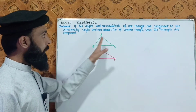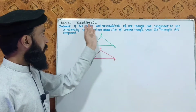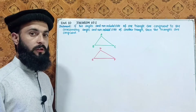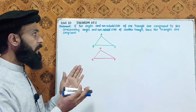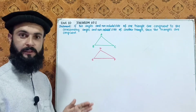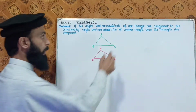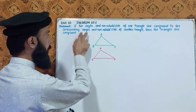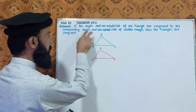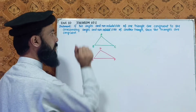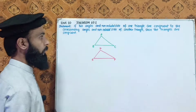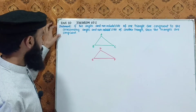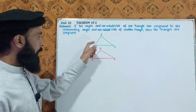Two triangles have two angles and the non-included side. Non-included side means two angles — one triangle is congruent. The corresponding angle of the non-included side of the other triangle must also be congruent. This is the statement of the theorem shown in the diagram.